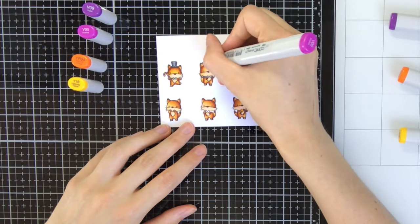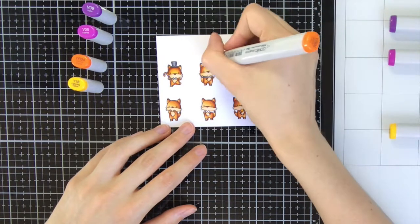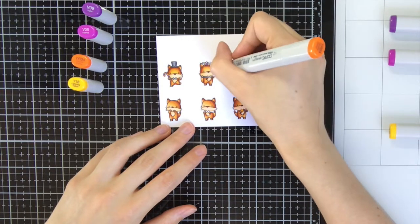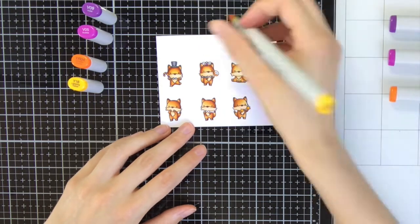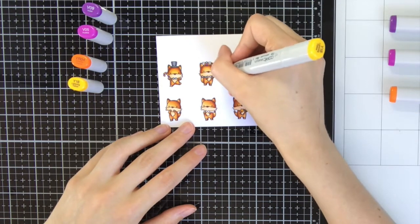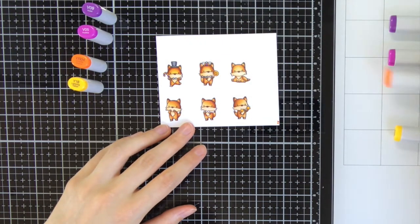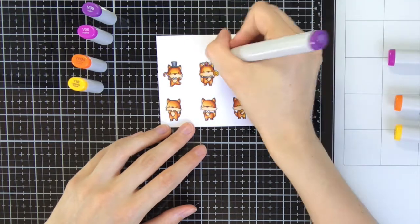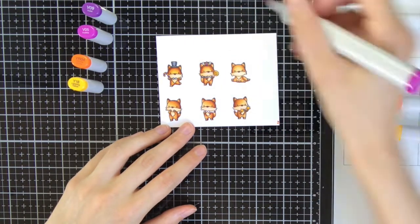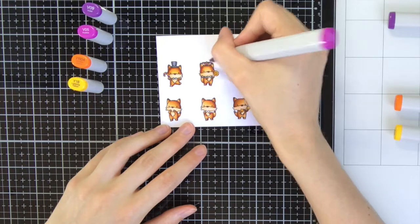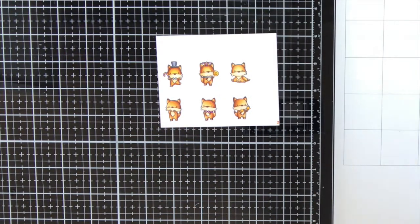For all the other accessories I am sticking to purple and orange. For the purple I am using V09 and V05, and for the orange I am using YR04 and Y18. As all the other accessories are so small I did not bother to work in two layers, I only did that for the hat of the fox.